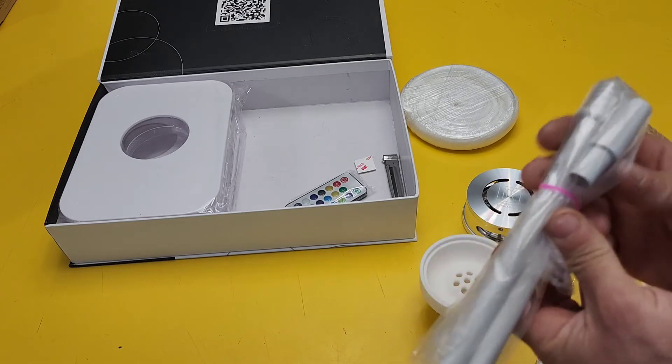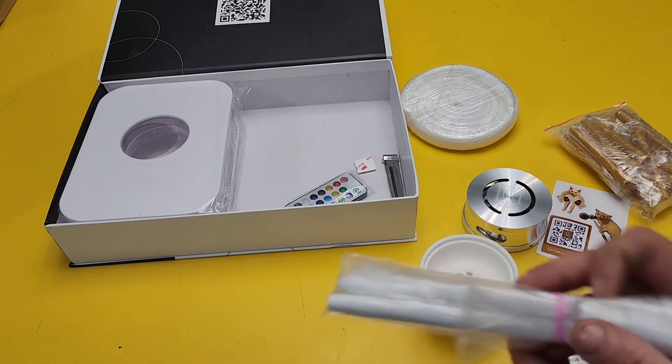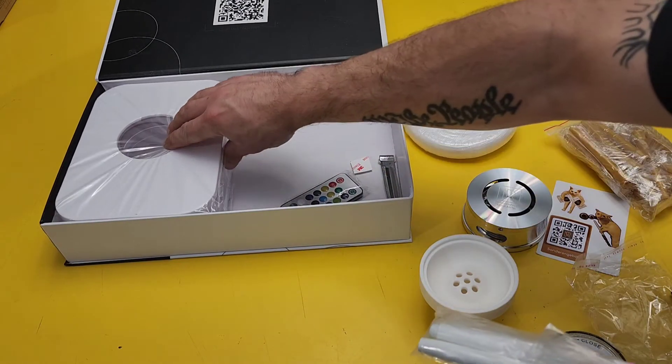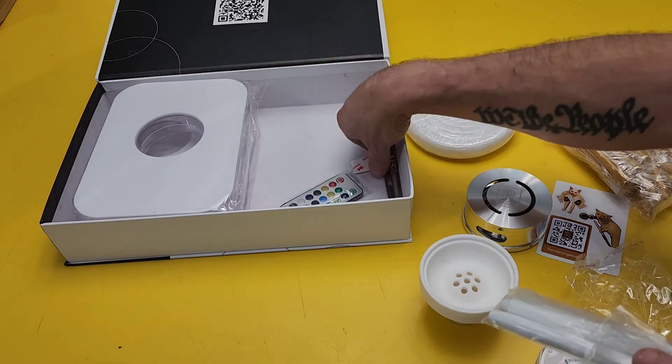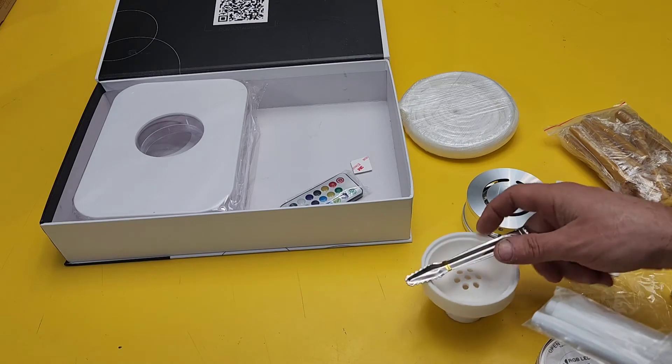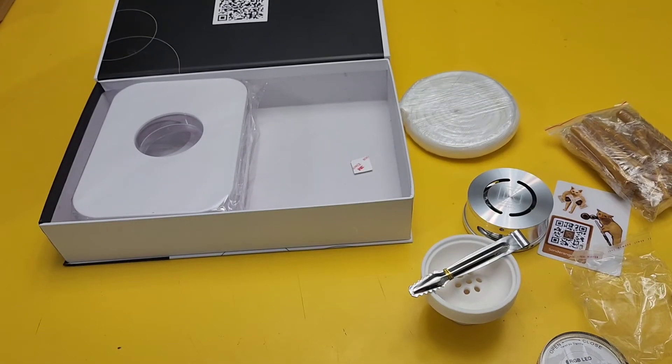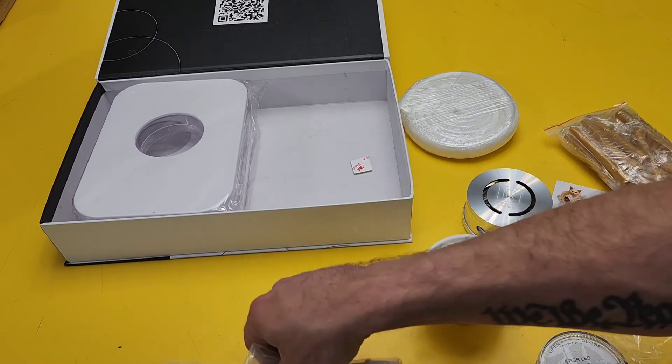I'm guessing this is the silicone base. Then you've got, I'm guessing this attaches to the tube, and then you've got the actual complete base of everything. Some tongs and a remote because it's color changing. So let's hook it all up and see what it looks like.